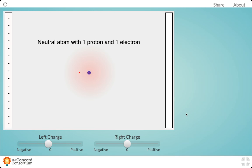This simulation shows a neutral hydrogen atom in the middle of two charged plates. The plates are also neutral right now, which means they are not charged, allowing us to get a good look at the structure of this neutral hydrogen atom.